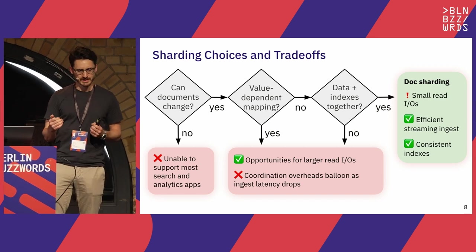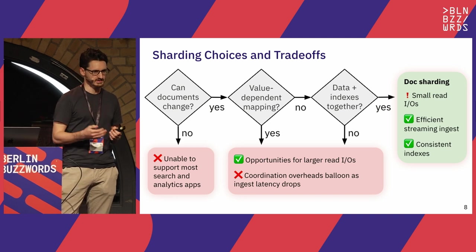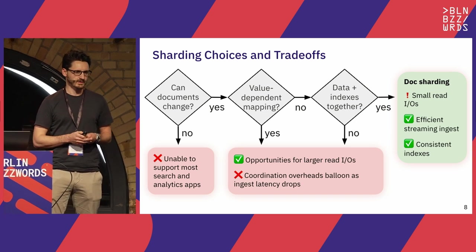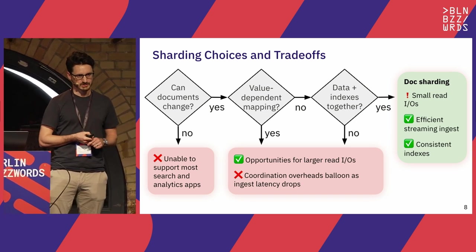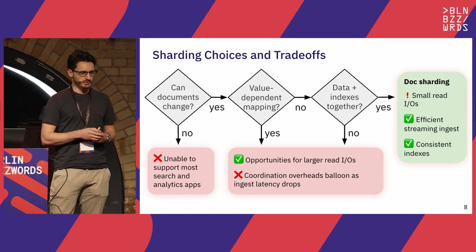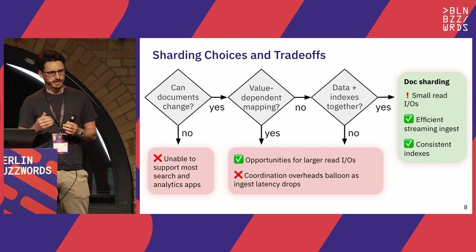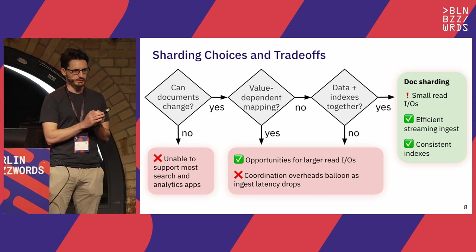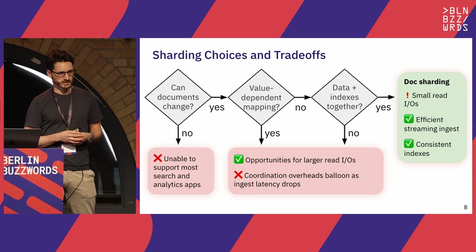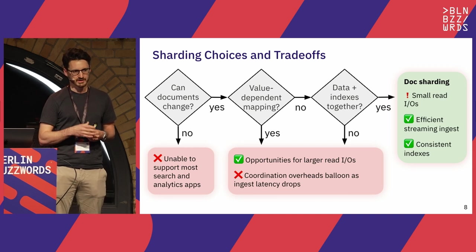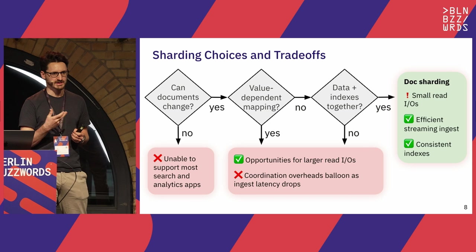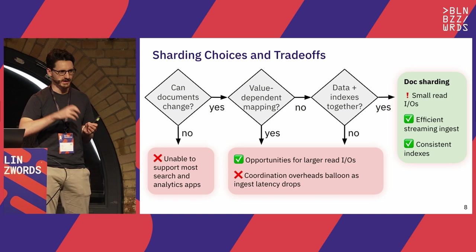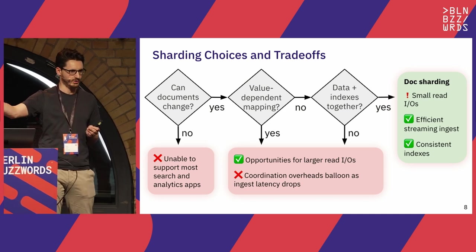Based on the clustering key, you choose where the document lives. The good part is when you have a predicate on that key, your query can talk to a single shard and all the relevant data lives close together, giving you bigger read IOs. But the problem is if documents are mutable, the clustering key can change, meaning one shard has to hand a document off to another shard — that's coordination. Systems usually solve this by increasing ingest latency, e.g., using 30-minute batches to lower coordination overhead.